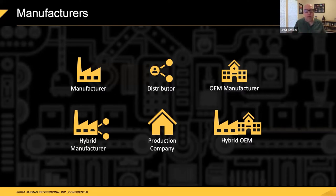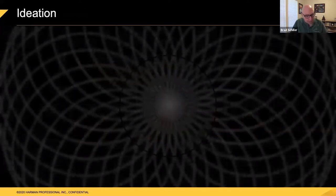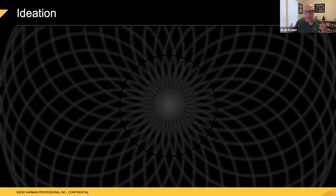Not every manufacturer is exactly the same. However, the process of actually getting from an idea to the output on stage is relatively the same — it varies from company to company and manufacturer style, but overall it's pretty much the same. When you want to design a new moving light, you've got to start with an idea. But where does that idea come from? There are ideas floating around out there from many different people and concepts.